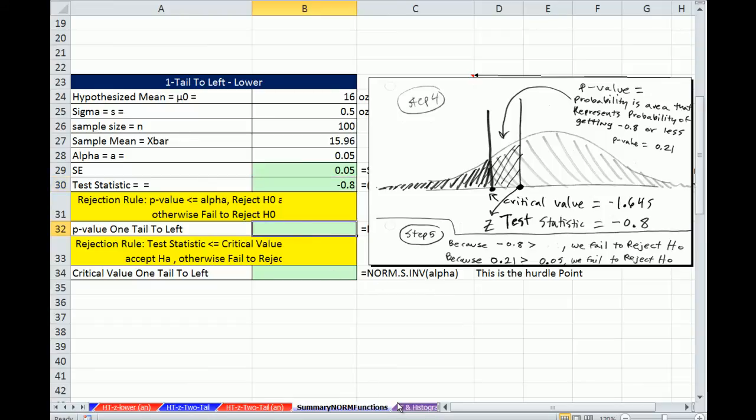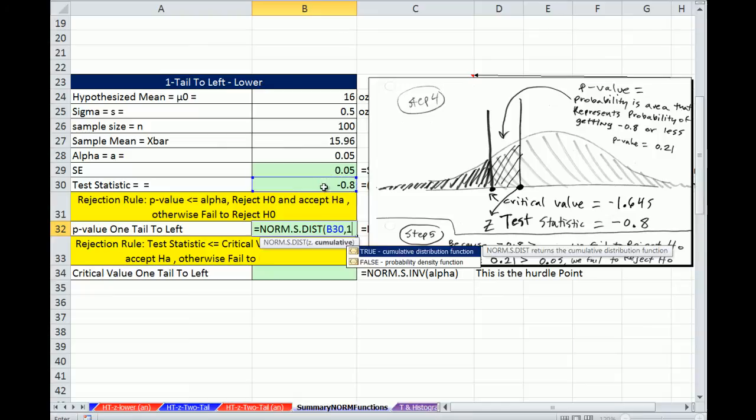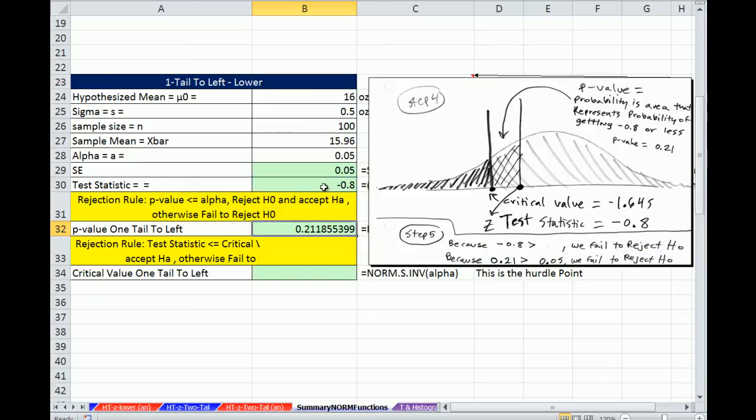Our p-value, we are from negative infinity up to that point. So no problem. We can just throw in our z here. So we do NORM.S.DIST. There's our z comma 1. The 1 says calculate the cumulative probability from negative infinity up to our z. So there it is, 0.21. We compare it directly to our alpha. Much bigger, so we fail to reject.